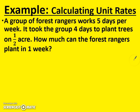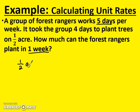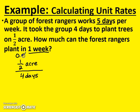Let's look at another example. A group of forest rangers works five days per week. It took the group four days to plant trees on one-half acre. How much can the forest rangers plant in one week? Remember, one week in this case is five days. So they can plant one-half of an acre in four days. If you don't like the fraction, you could always turn it to a decimal — zero point five acres — that's fine too.